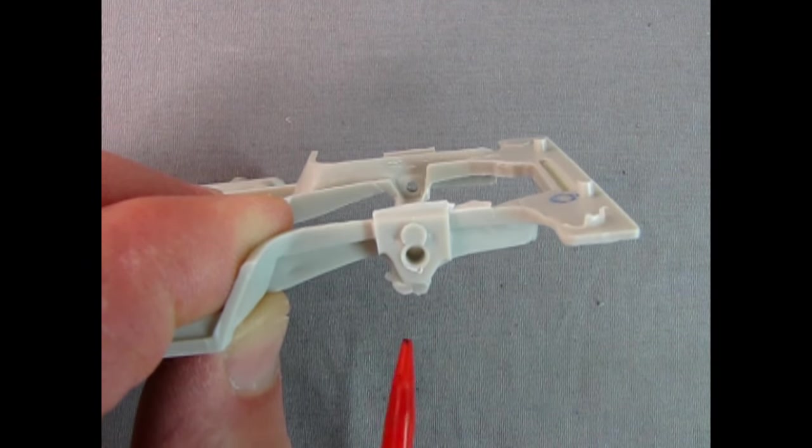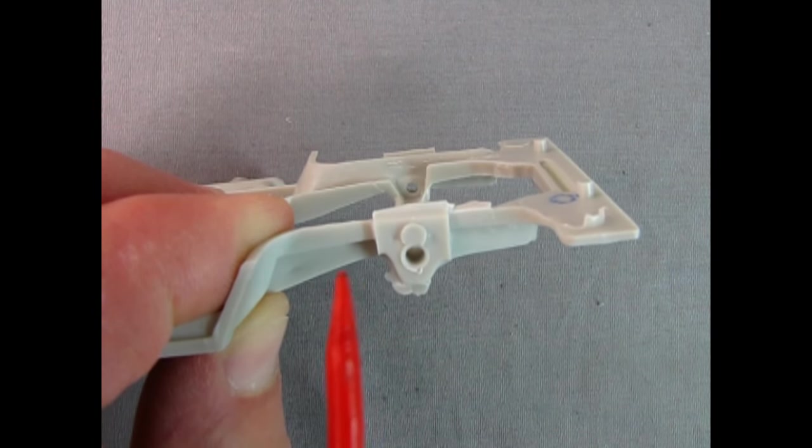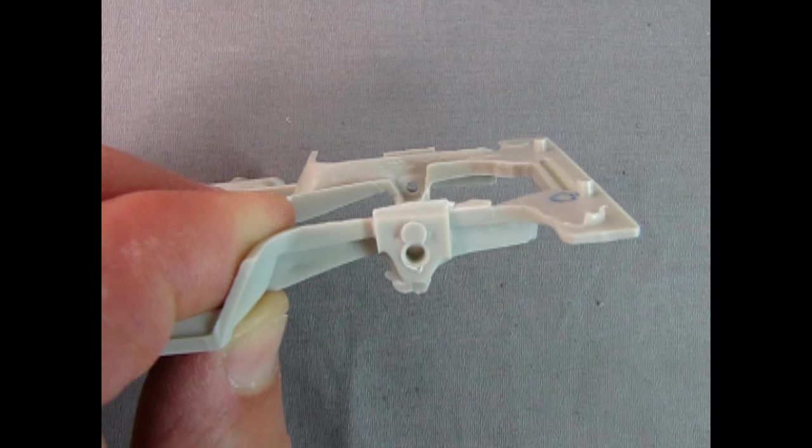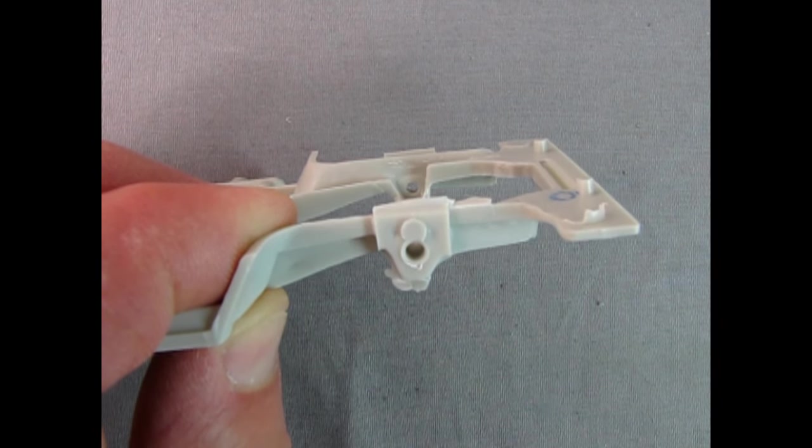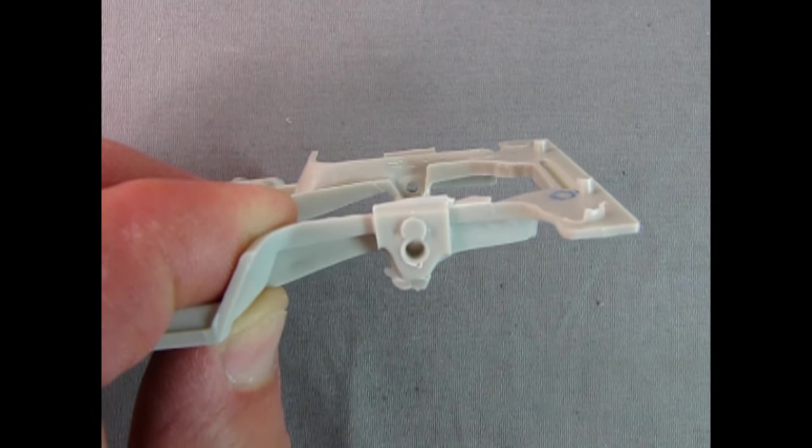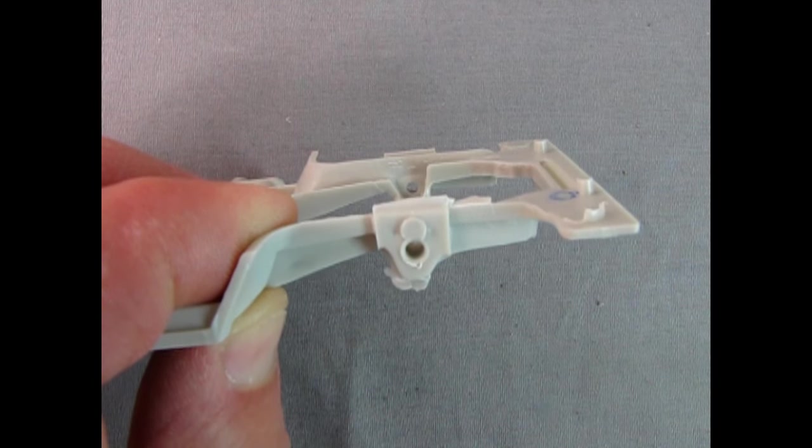If you notice those front axle mounting holes, you will see a circular mold mark above them. In theory, if you drilled a hole in the center of these mold marks, you could run an axle between them and lower the front end of the car, provided the tires don't hit the top of the inner fenders. But this is just my theory. I haven't actually done it.